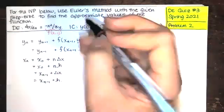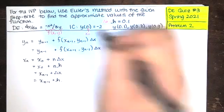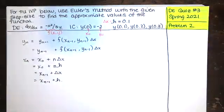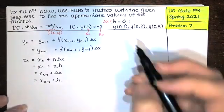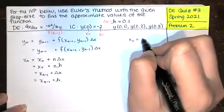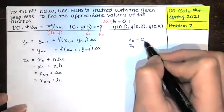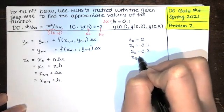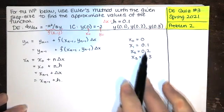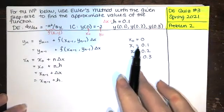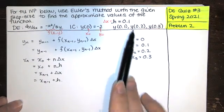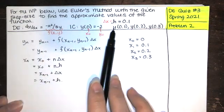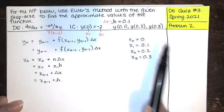Our initial x value is the x value in the initial condition — we call that x naught — and this is our y naught. With step size 0.1 and x naught equal to 0, x1 is 0 plus 0.1, x2 is 0.1 plus 0.1, and so on. We just keep adding 0.1 each time. With this step size, we go through Euler's method three times to find approximations of y(0.1), y(0.2), and y(0.3).